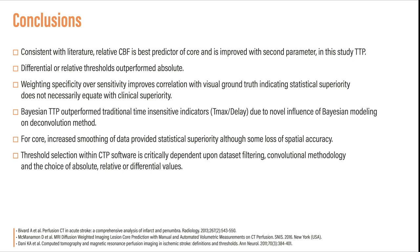In conclusion, this study demonstrates that consistent with literature, relative cerebral blood flow is the best predictor of core, improved with a second parameter — time to peak. Differential or relative thresholds outperformed absolute. Weighting specificity over sensitivity improved correlation with visual ground truth, indicating that statistical superiority does not necessarily equate with clinical superiority. Bayesian time to peak outperformed the traditional time-insensitive indicators Tmax or delay, possibly due to a novel influence of Bayesian modeling on the deconvolution method. For core, increased smoothing provided statistical superiority, although with some loss of spatial accuracy. Lastly, threshold selection with CTP software is critically dependent upon the dataset filtering, the convolutional methodology, and the choice of absolute, relative, or differential values.